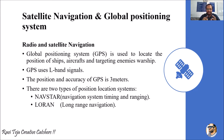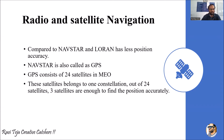GPS uses L-band signals. The position accuracy of GPS is somewhere around three meters, meaning you can get the exact location within three meters. There are two types of position location systems: NAVSTAR and LORAN. NAVSTAR stands for Navigation System Timing and Ranging; LORAN stands for Long Range Navigation. Compared to NAVSTAR, LORAN has much less position accuracy, so NAVSTAR is much more preferred for GPS applications.